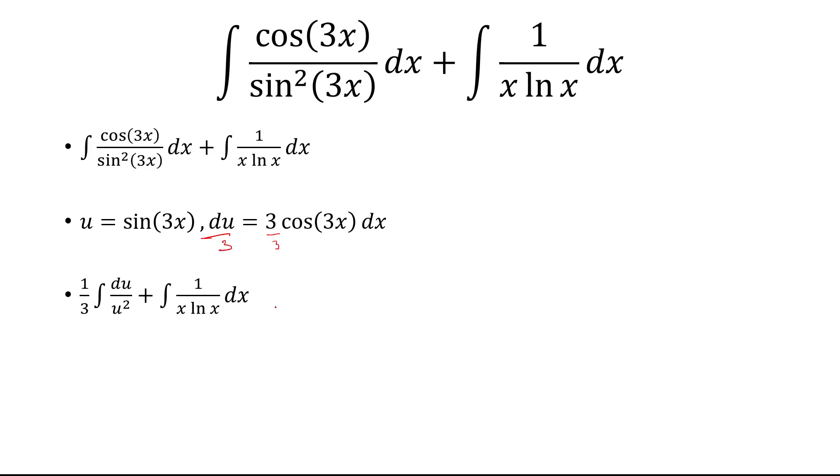Now, that's just going to be one-third du over u squared. One over u squared—the antiderivative is negative one over u—making sure to multiply by one-third. Replace u with sine 3x, and now the first integral is complete.